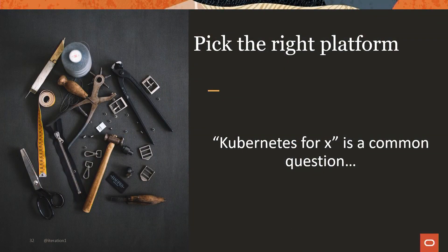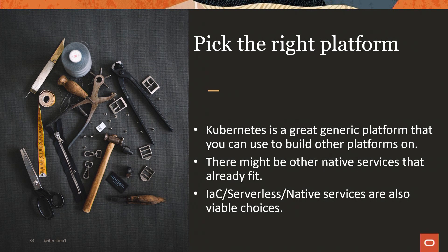Once we've deployed, a lot of customers want to use Kubernetes for specific use cases. I talked to a lot of folks who asked 'how do you use Kubernetes to run Oracle Database?' — a common question. One thing I want to stress is that Kubernetes is a great generic platform that can do a lot of things, but remember it's not the only thing out there. There are a lot of other choices. If you're on a cloud — Oracle Cloud, Amazon, whatever — there might be a native service you could use, or different ways to build the same thing, like infrastructure as code with Terraform or serverless to solve the same problem.